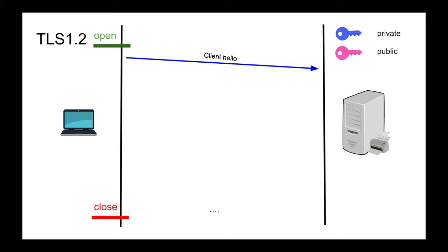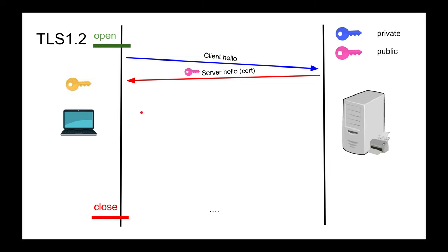The client also asks the server to send its certificate. The server responds with a Server Hello containing its public key and certificate, and they agree on parameters — for example, use RSA for key exchange and AES-256 for the symmetric cipher.